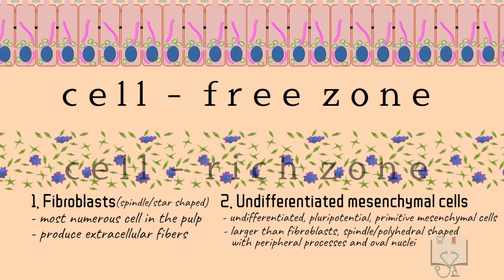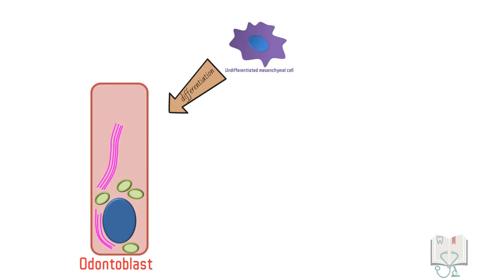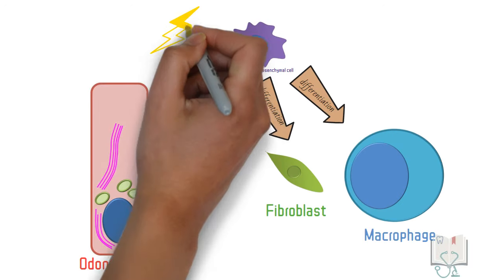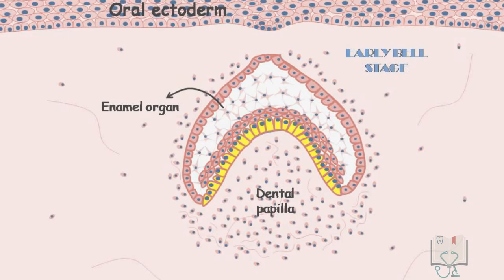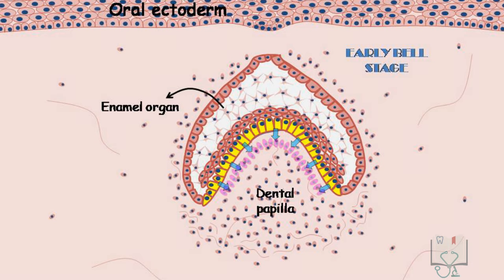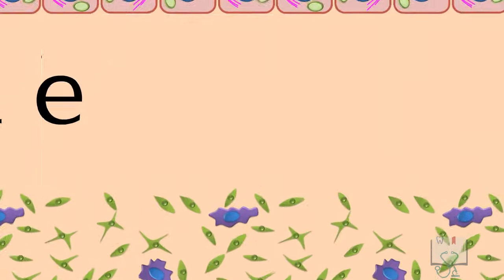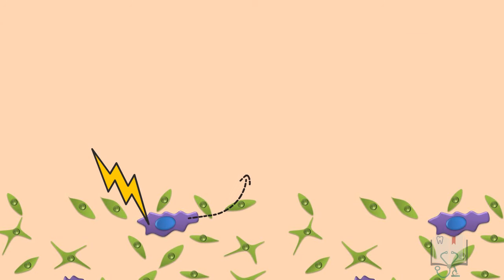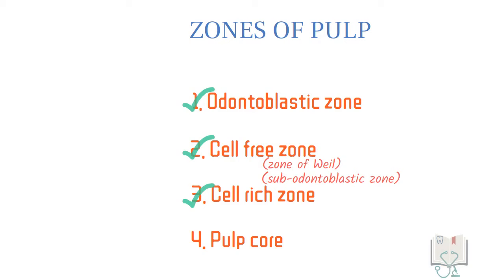Undifferentiated mesenchymal cells have peripheral processes and oval nuclei. When required, they may differentiate into odontoblasts, fibroblasts, or macrophages. What chemical stimulus exactly drives their differentiation into odontoblasts is still a topic of research. During tooth development, cells of the dental papilla receive signals from ameloblasts, but in the mature pulp where ameloblasts are gone, which cell sends the signal for this differentiation is still debatable.